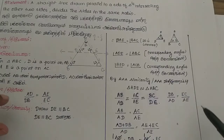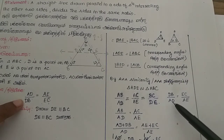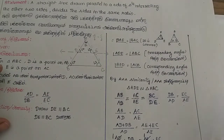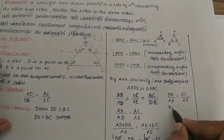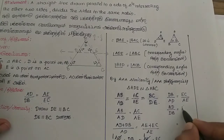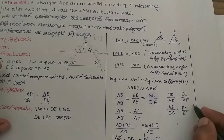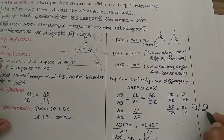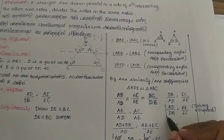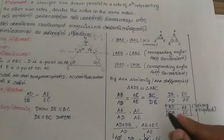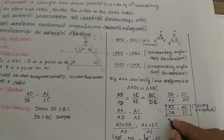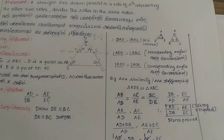Taking the reciprocal on both sides, AD/DB equals AE/EC. Hence the theorem is proved.